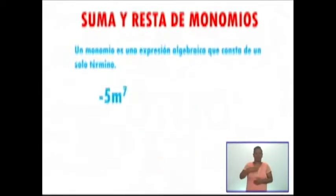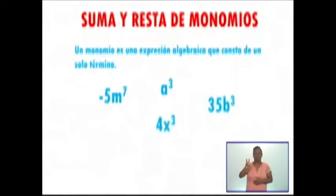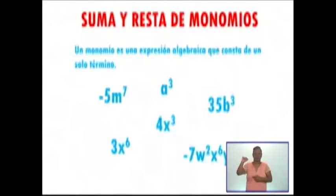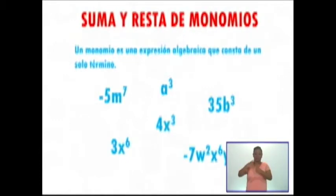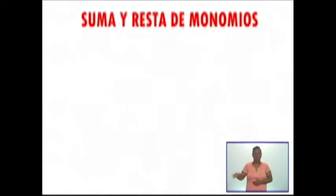Recordemos que un monomio es un solo término. Aquí tengo: menos 5m a la séptima, a cúbica, 35b cúbica, 4x cúbica, 3x a la sexta potencia, menos 7w cuadrada, x a la sexta potencia, y cúbica. Todos estos son ejemplos de monomios.